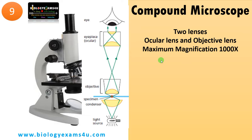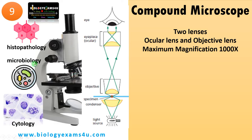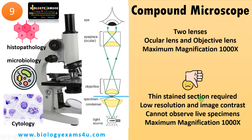This is the most commonly used microscope, starting from schools and colleges, and is also used in histopathology and microbiology labs — for viewing tissues, cells in microbiology, and processes like mitosis and meiosis. The downside is that thin, stained sections are required, resolution and image contrast are low, and it is not suitable for live specimens. However, it is portable, economical, and affordable.